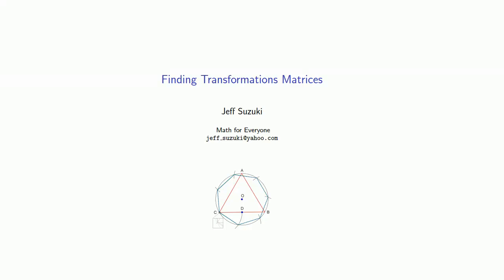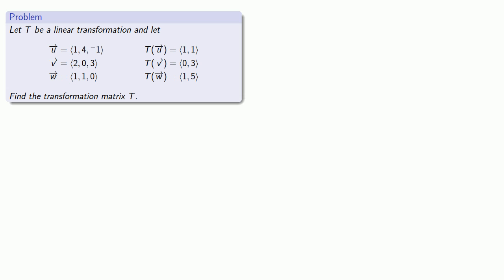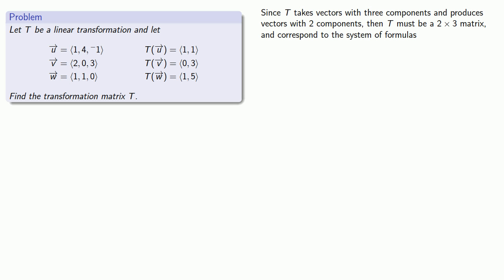Now let's try and find the transformation matrix for a linear transformation. Since T takes vectors with three components and produces vectors with two components, then the transformation matrix T must be a 2 by 3 matrix and corresponds to the system of formulas shown.